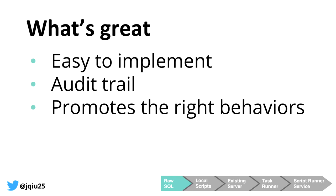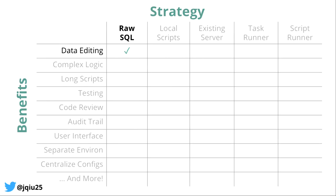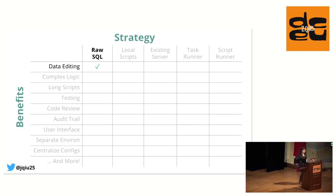And lastly, this process works to promote the right behaviors — it helps encourage everyone to be more careful and teaches engineers what the right things to do are. We now have a strategy that gives us the benefit of data editing with very little upfront investment, a manual version of code review, and an audit trail. Raw SQL edits are probably not going to go away at your average startup — we still use this spreadsheet today. But this process empowers engineers to avoid mistakes, and introducing it also makes it slightly more painful to run queries, which encourages us to build better tools.